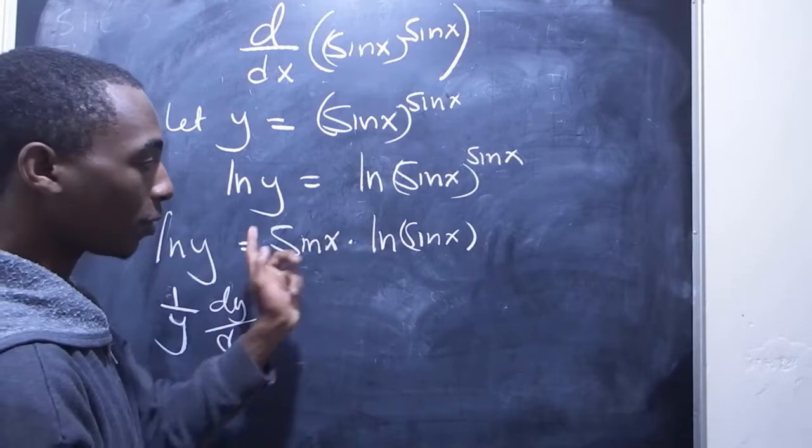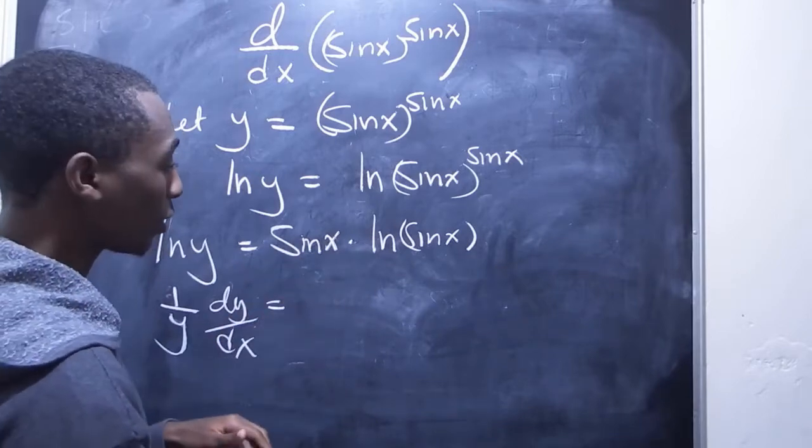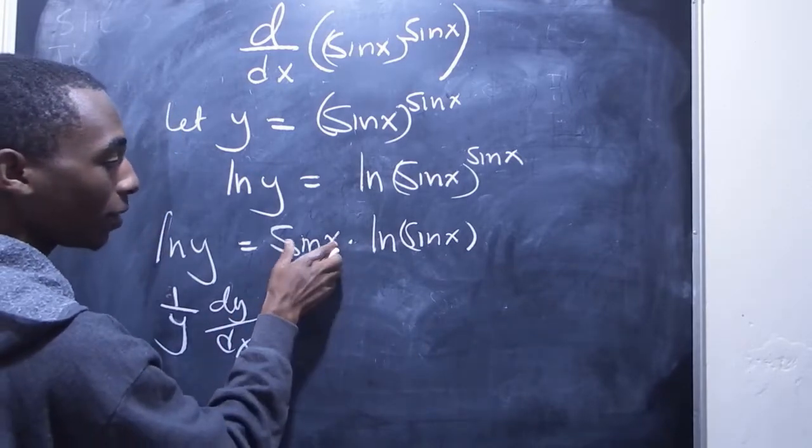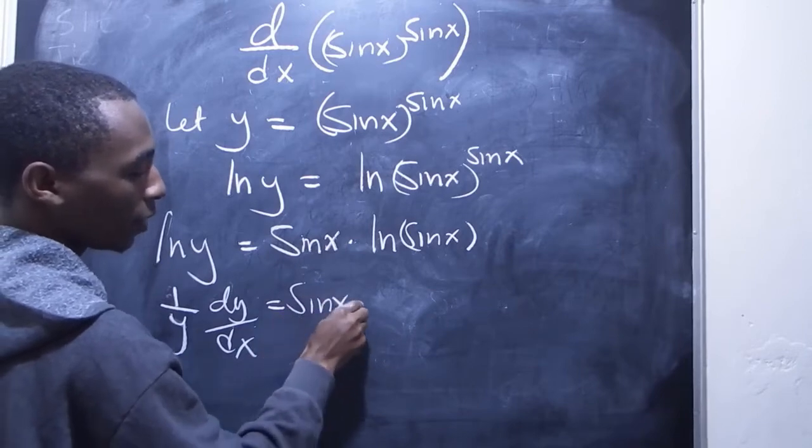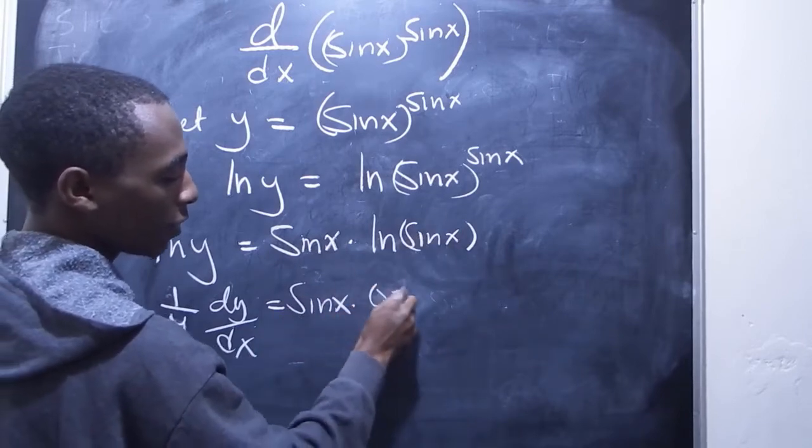Here, these are two functions, a product of two functions, so I'll use product rule. Let's begin by keeping this constant. We'll take the derivative of this.